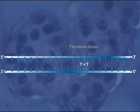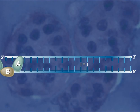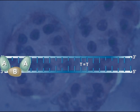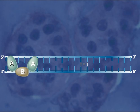The process begins with the loading of a protein trimer onto the DNA double helix. This trimer consists of two UV-R-A molecules and one UV-R-B molecule.